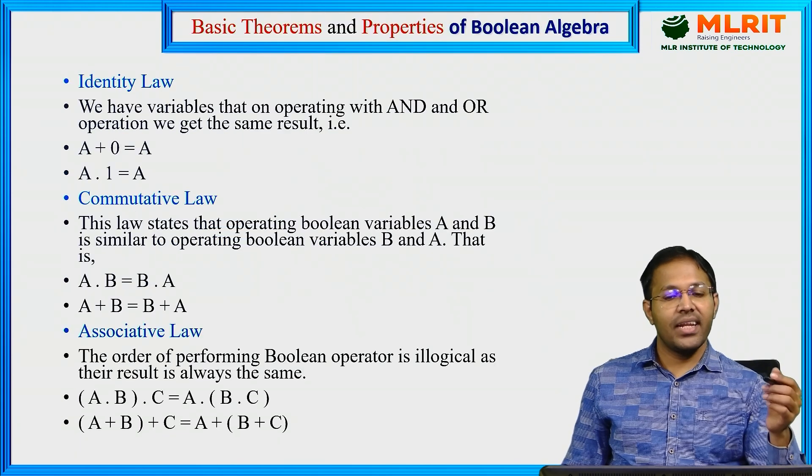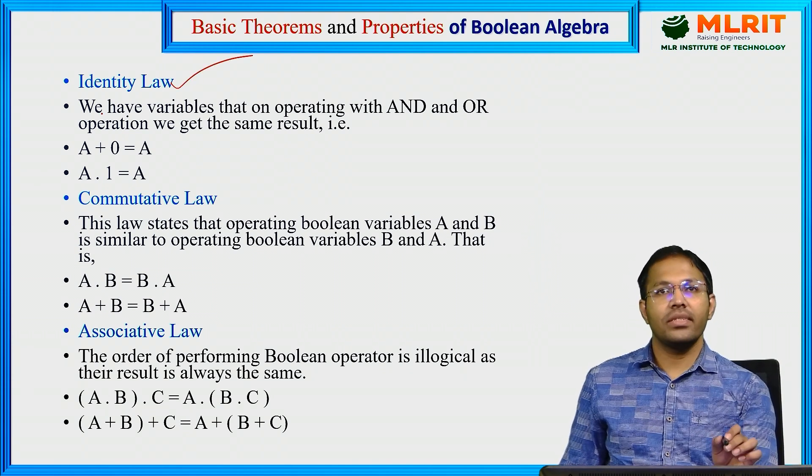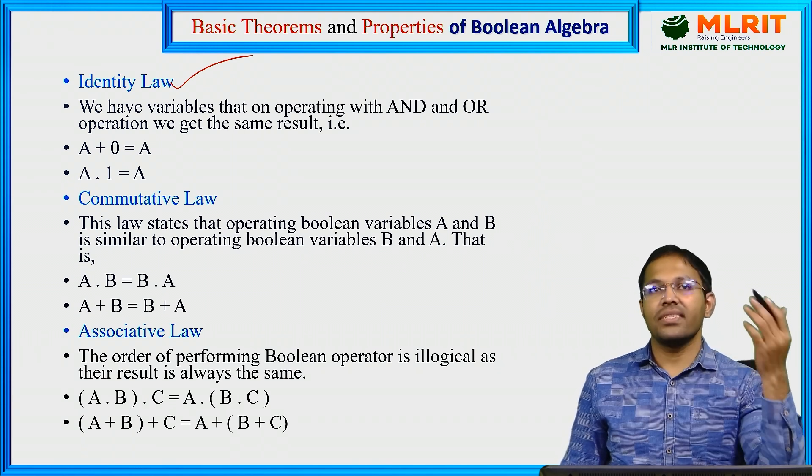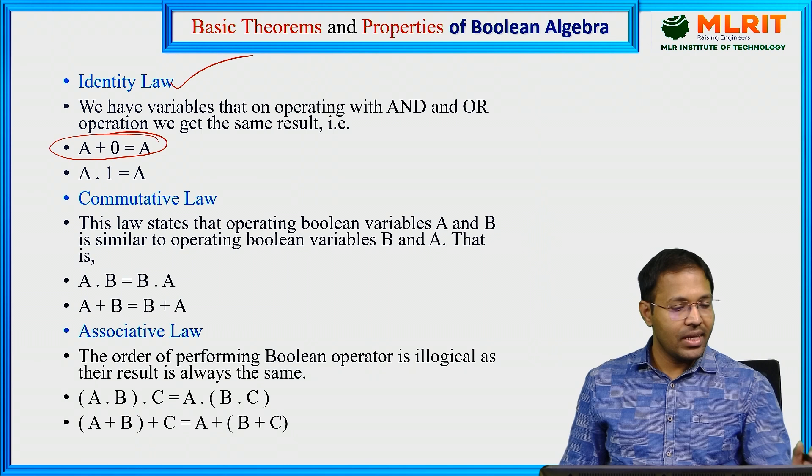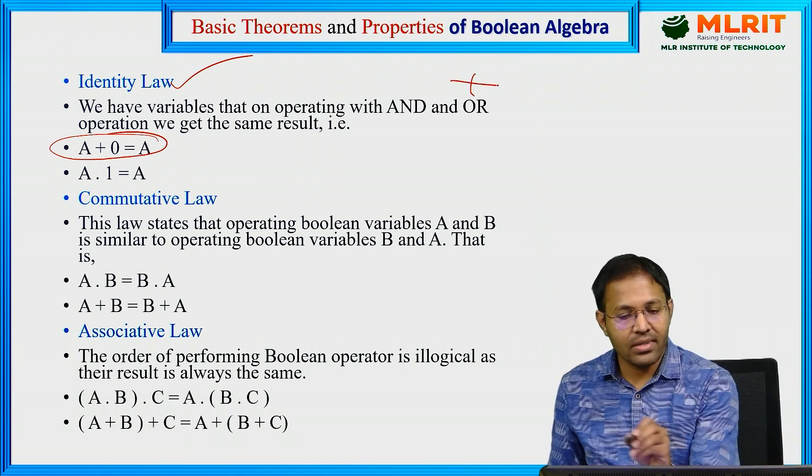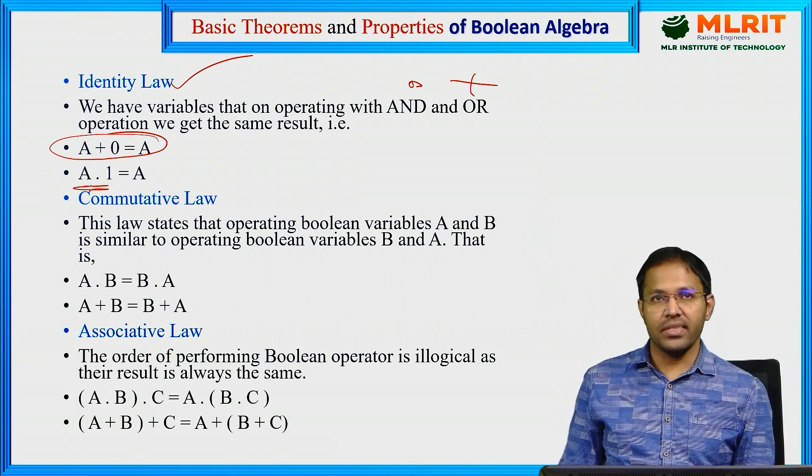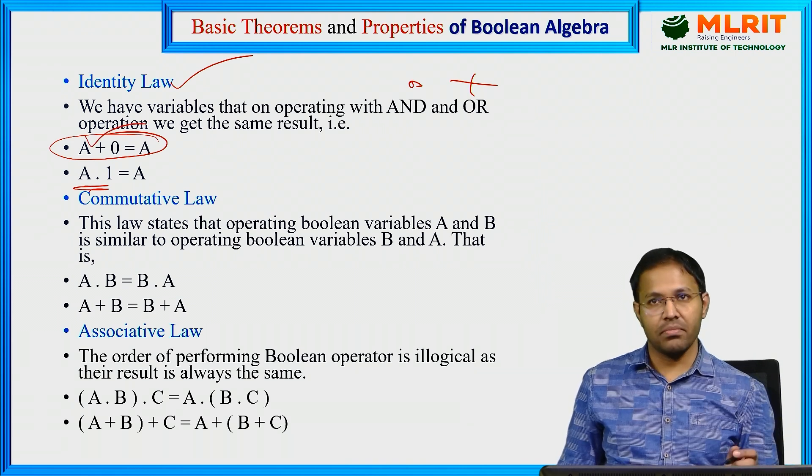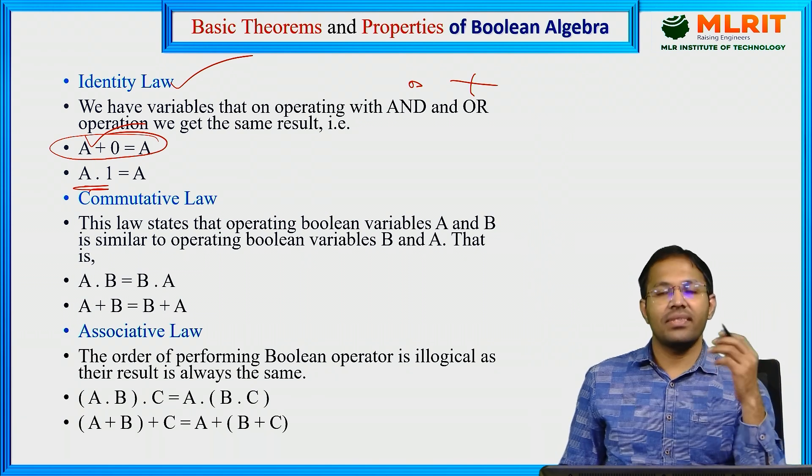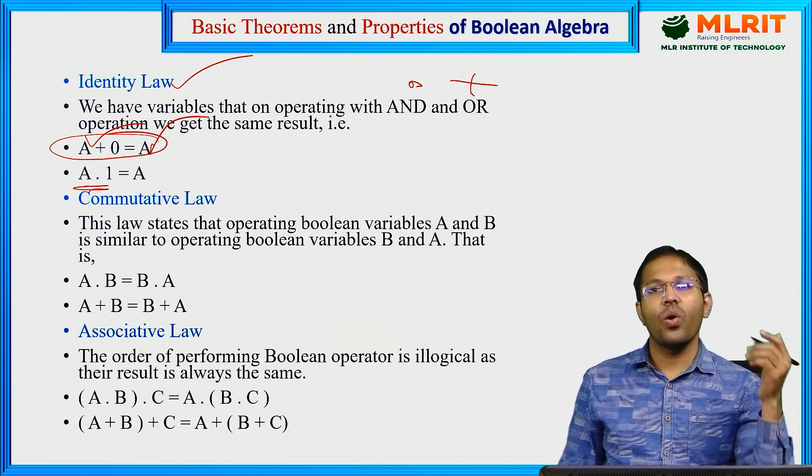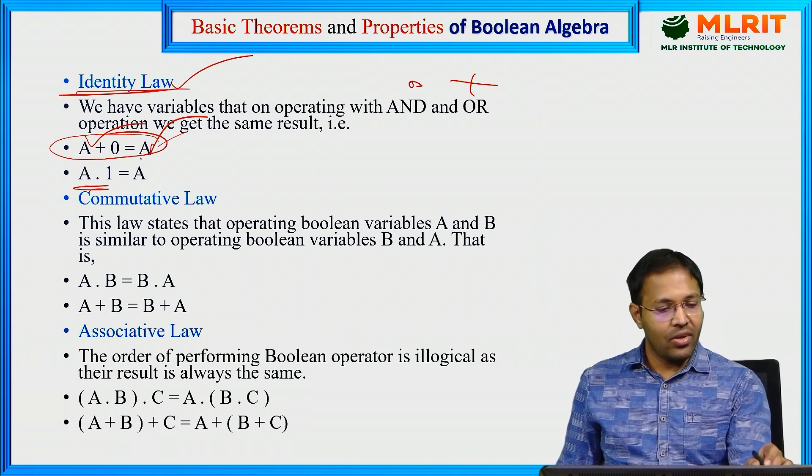Let us see the different theorems and properties. First, Identity Law. Here if we have two variables that are operating and we get the same result. For example, A OR 0 is A. Remember, plus represents OR, multiplication is AND operation. Dot here is the AND operation, plus here is the OR operation. Suppose if A is 0, 0 OR 0 will be 0, so again you get back A. If A is 1, 1 OR 0 gives us 1. Such law is known as identity law.